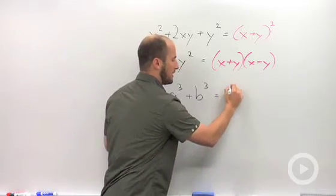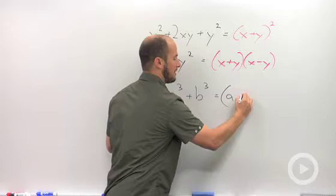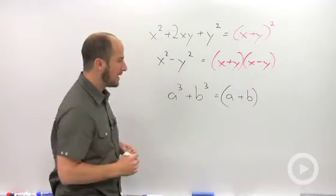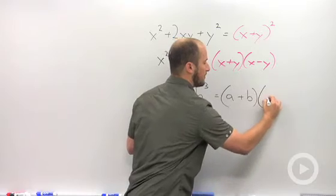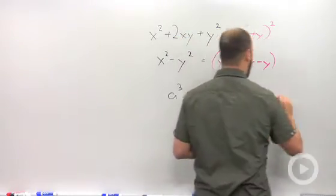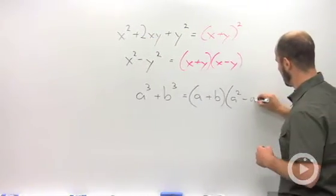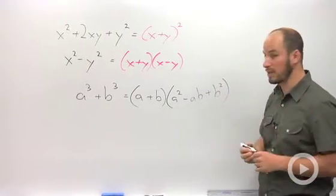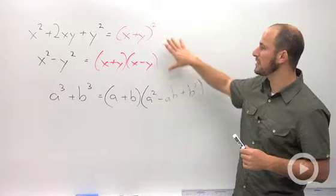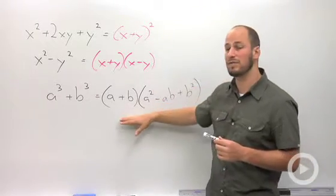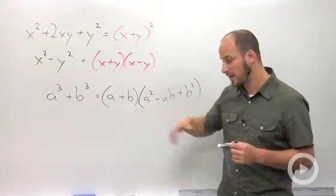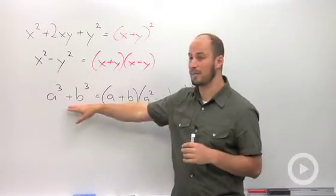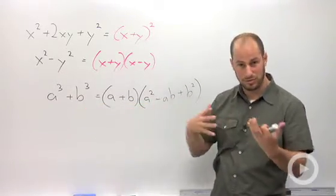How this works is we have a binomial a plus b, and then we also have a trinomial which is going to be a squared minus ab plus b squared. Just like these are formulas, this is a new formula as well. I will call this the sum of cubes because we're adding two cubes together.